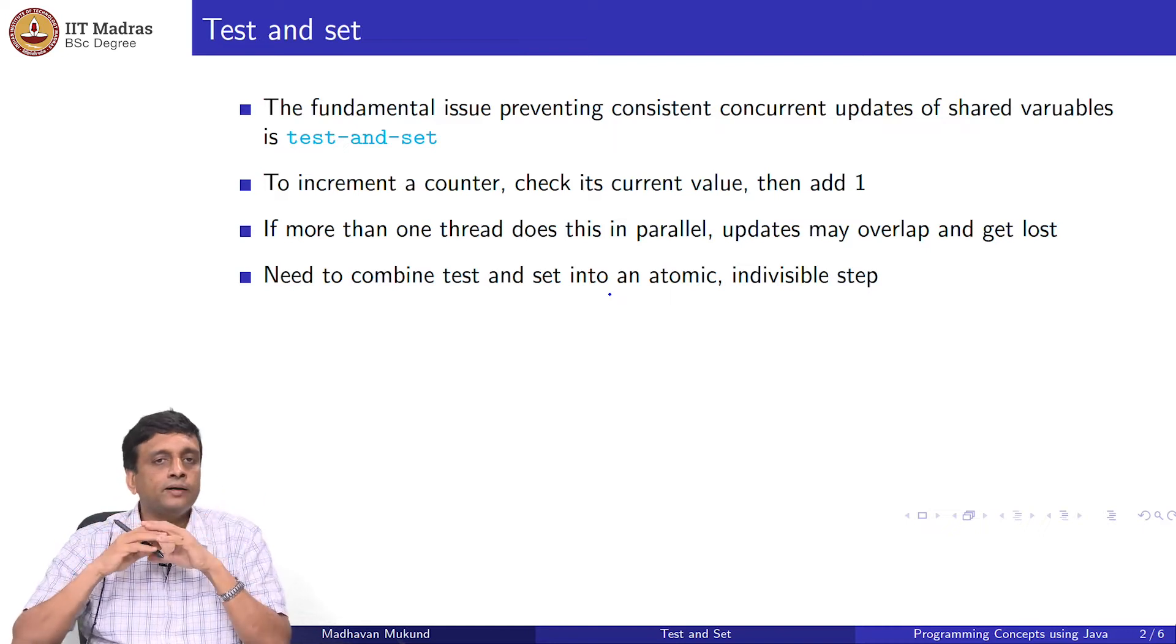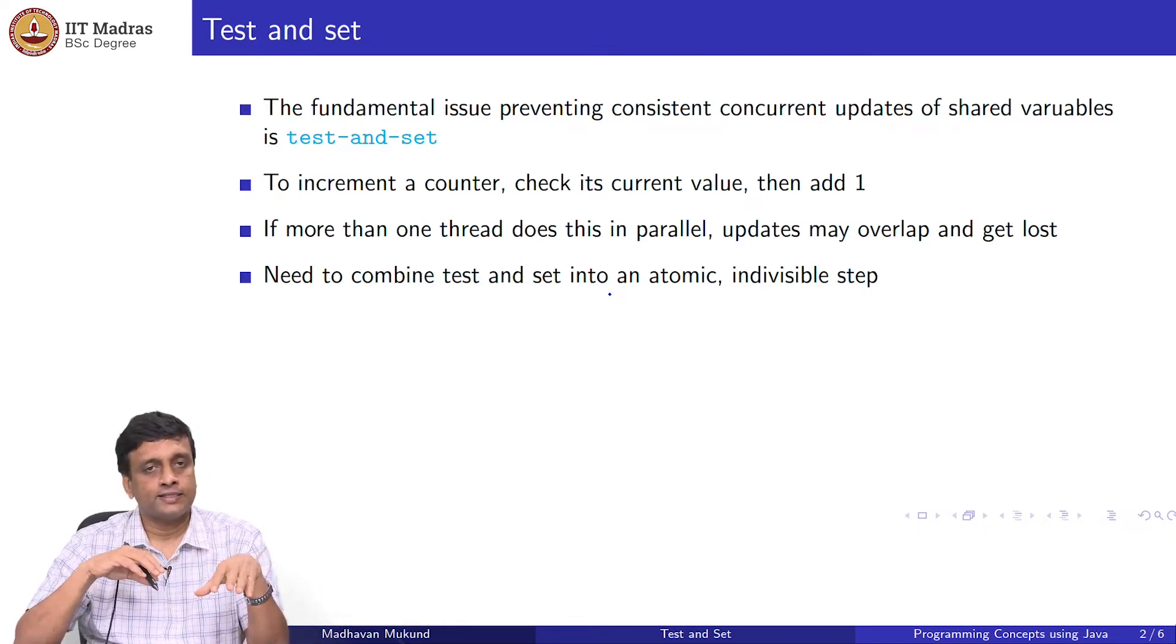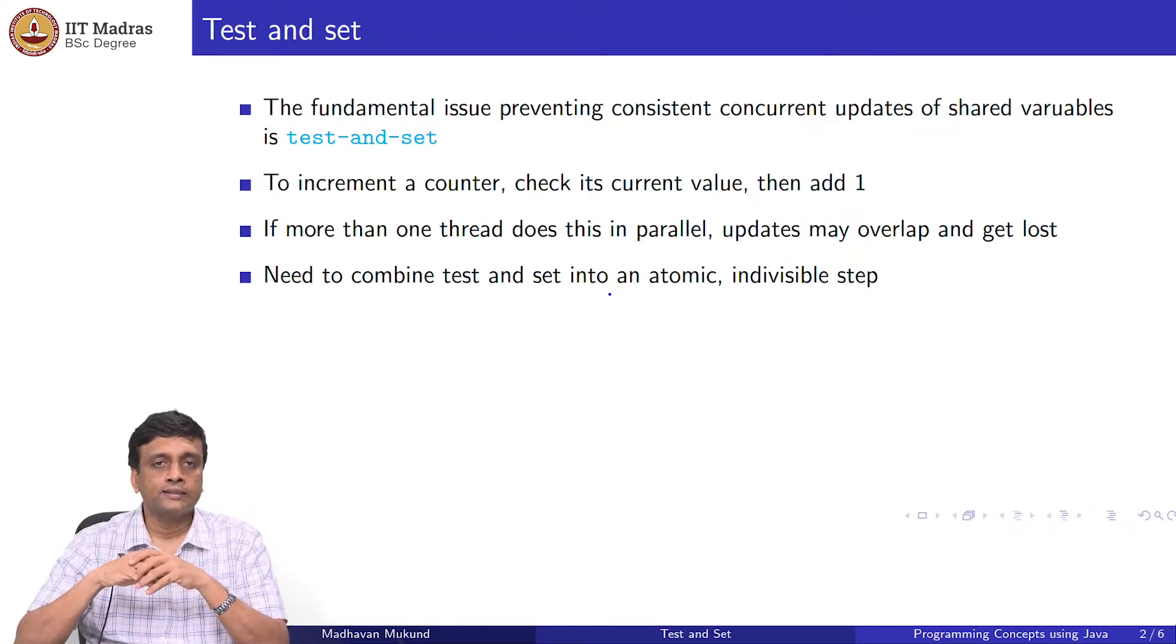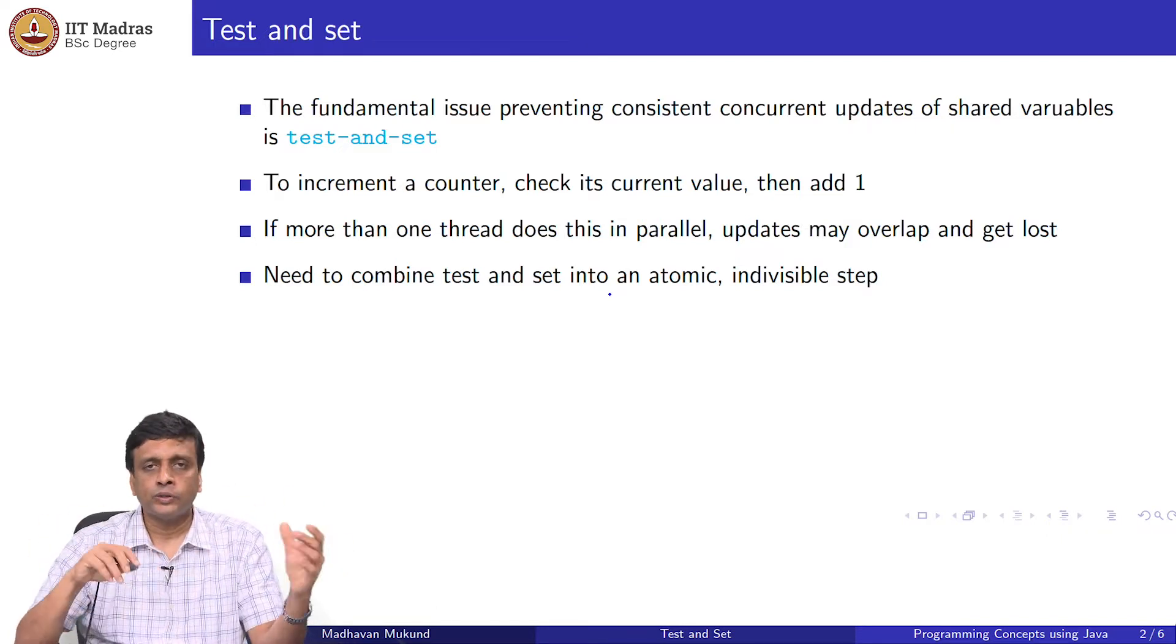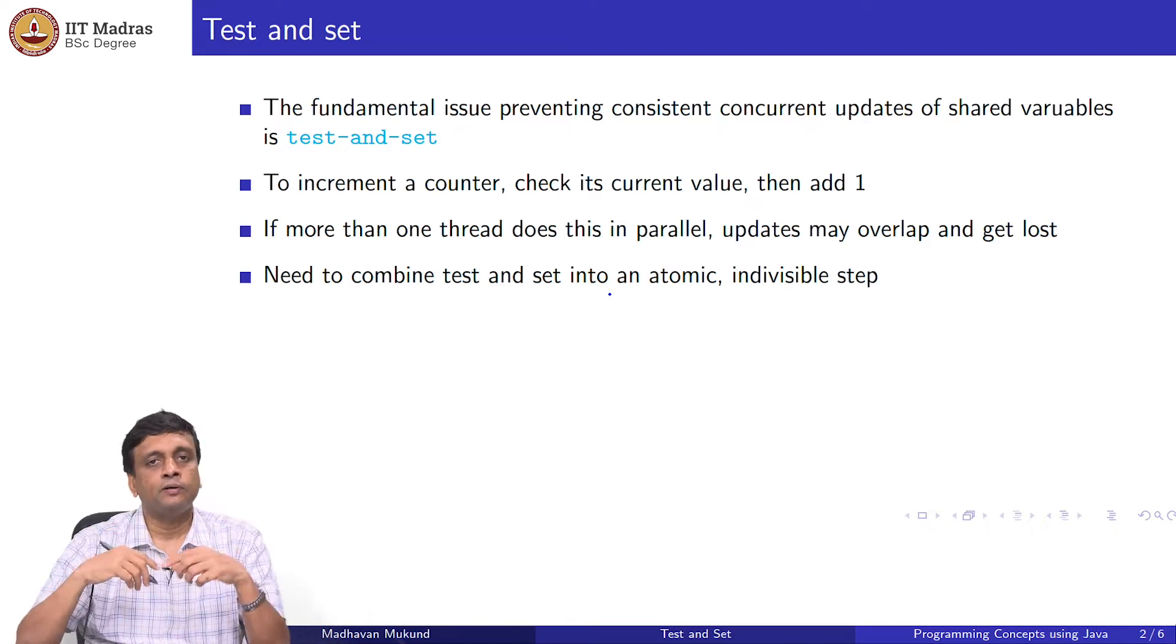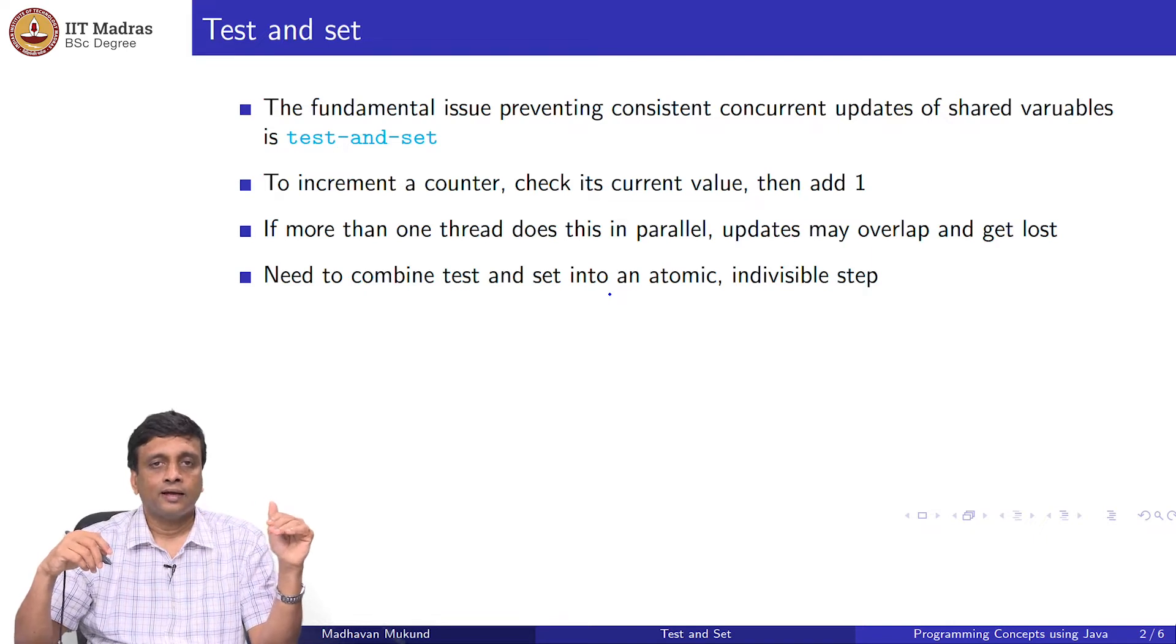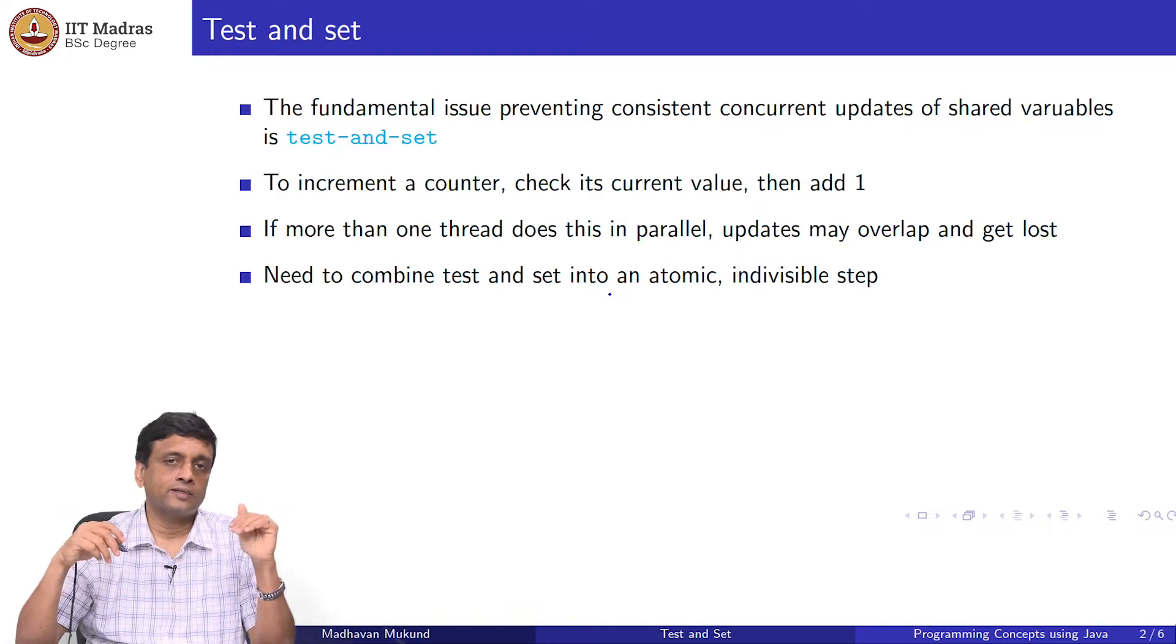One essential step is that we saw these mutual exclusion protocols which bypass this whole question of test and set and created a clever way of doing mutual exclusion of critical sections without using test and set. We use shared variables like turn, request 1, request 2, which did not have this test and set property. By cleverly synchronizing them and how they interact with each other, we are able to ensure that two threads do not simultaneously access the critical section. We said that that is error prone, and therefore we would prefer if the language would actually give us some support.